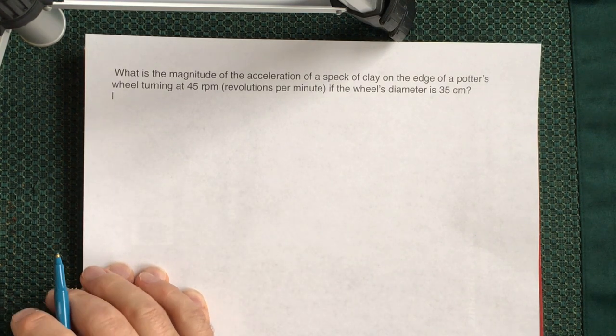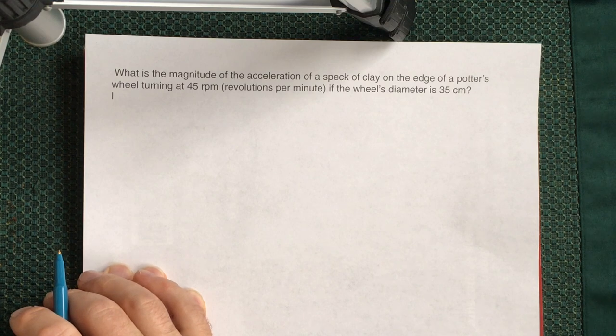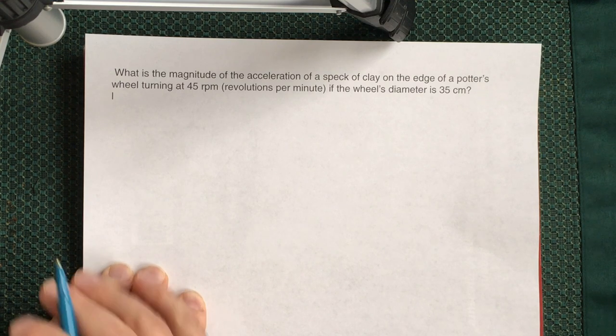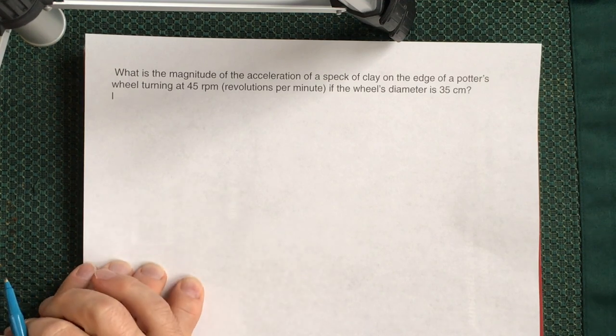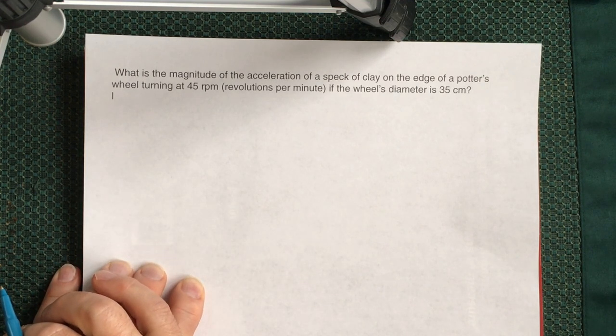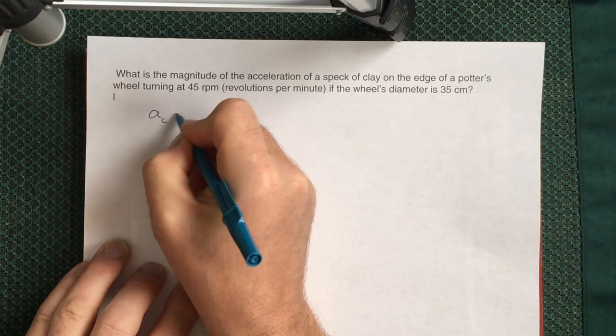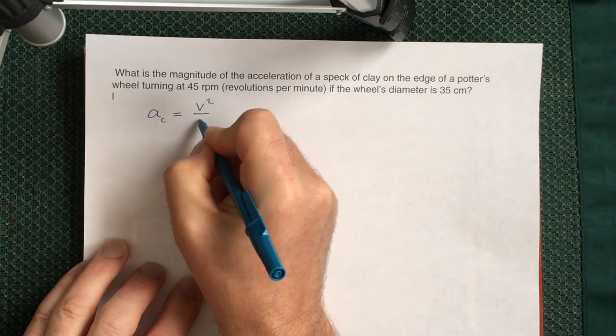All problems where you need to find centripetal acceleration, acceleration due to rotation, are formal. So you always have to start from the definition of centripetal acceleration. You have the following definition: a_centripetal = v²/r.